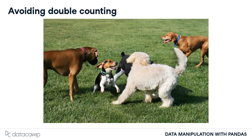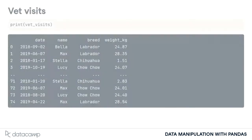Counting dogs is no easy task when they're running around the park — it's hard to keep track of who you have and haven't counted. Here's a data frame that contains vet visits. The vet's office wants to know how many dogs of each breed have visited their office. However, some dogs have been to the vet more than once, like Max and Stella, so we can't just count the number of each breed in the breed column.